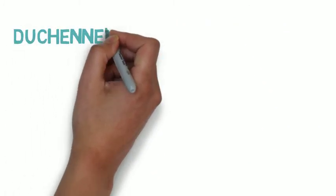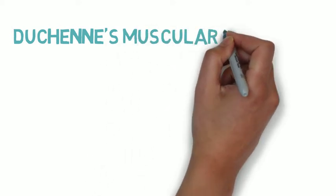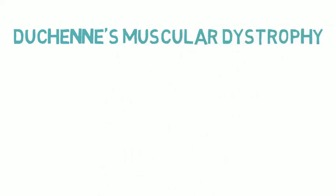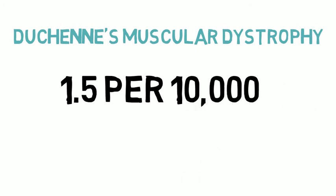There are numerous different types of muscular dystrophies, however the most common is known as Duchenne's muscular dystrophy, which has a prevalence of 1.5 per 10,000 males in Canada.